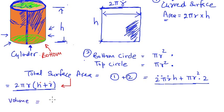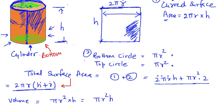Now what remains is the volume computation. The volume of a cylinder is simply equal to the footprint area — which is πr², the area of the base — times the height h. In other words, the volume of the cylinder is πr²h.